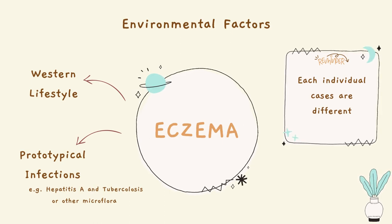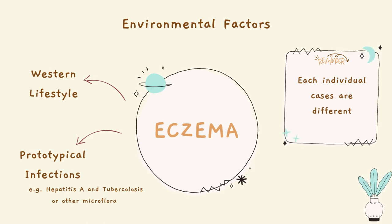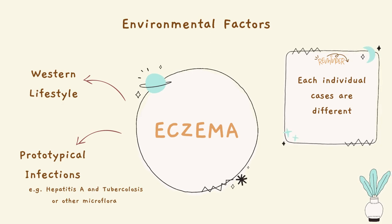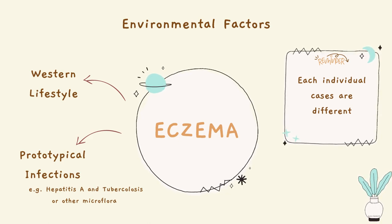Besides the genetic component, there are many different environmental factors considered potentially related to the development of eczema. For example, some research evidence shows that a Western lifestyle has been associated with an increase in atopic dermatitis occurrence over the past years. Some studies also show that exposure to perinatal infections such as hepatitis A and tuberculosis, or other microflora during early childhood, is associated with lower risk or reduced susceptibility to developing the disease. However, as the etiology is not completely understood yet, each individual case would be different.